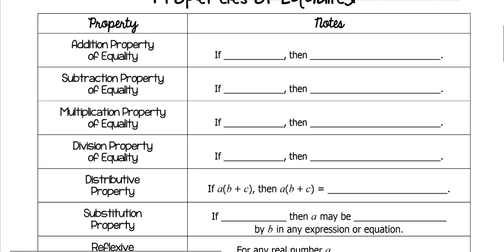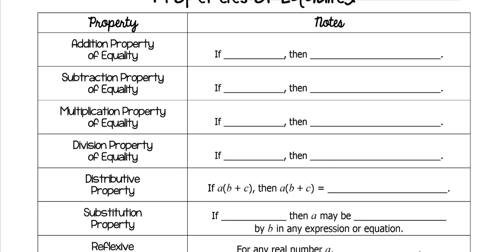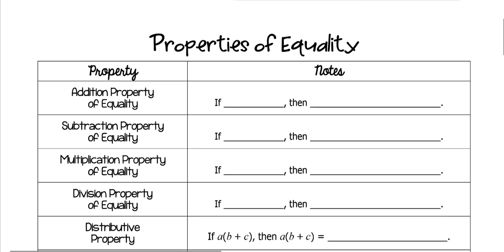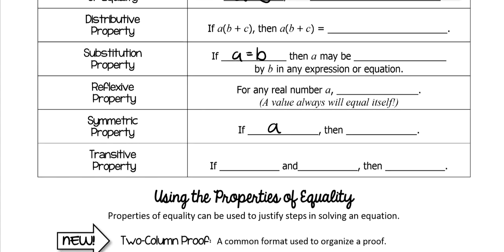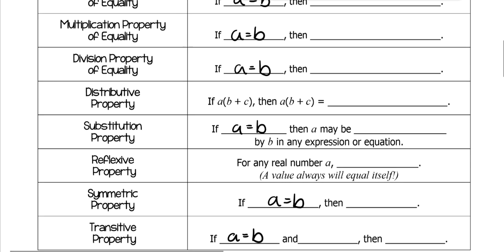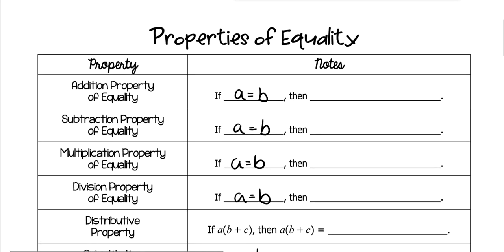First of all, we need to look at all of these properties and know what they mean. For all of them, it just says if A equals B. All of them are going to say that in the very beginning. So this is just basic math speak. They all start off with A equals B.